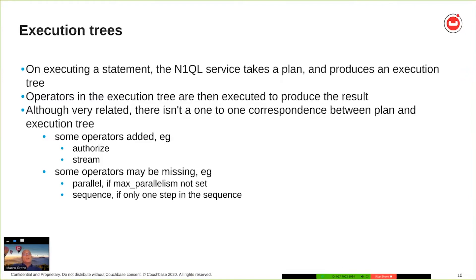The list of execution operators is known as the execution tree. Nickel takes a plan, goes through it, and through the instantiation phase produces an execution tree. There is a one-to-one relationship between execution operators and plan operators, but not between a plan and the execution tree. During instantiation some operators will be added — such as the authorizer operator and the stream operator — which are needed for actual execution. Other operators might be optimized away: if there is a sequence with just one step, you will not see the sequence in the final instantiation.